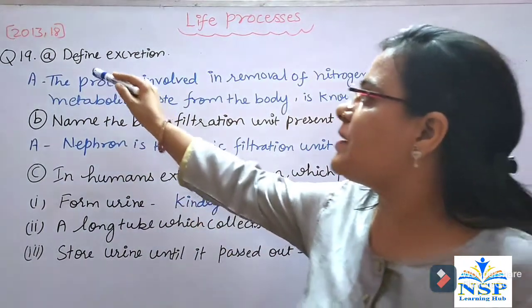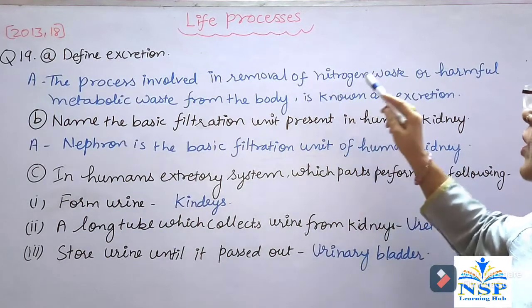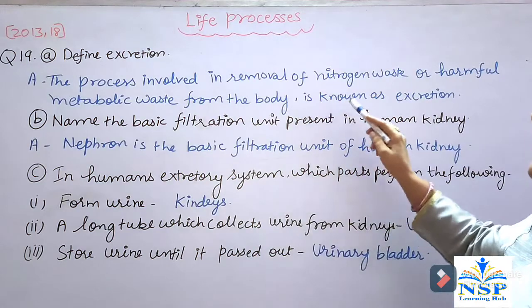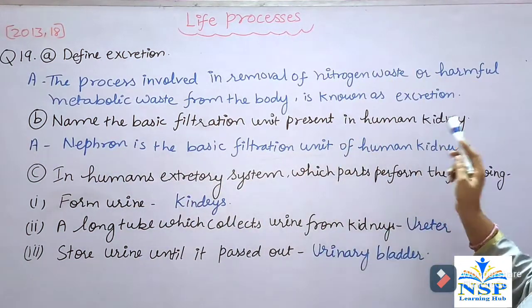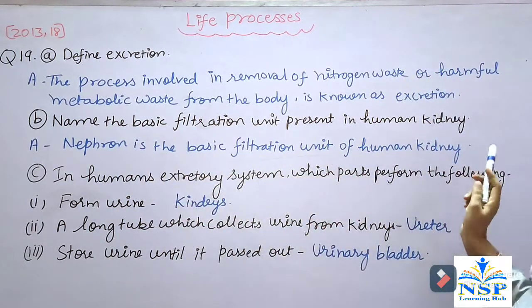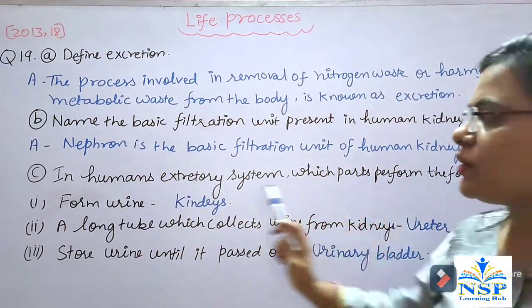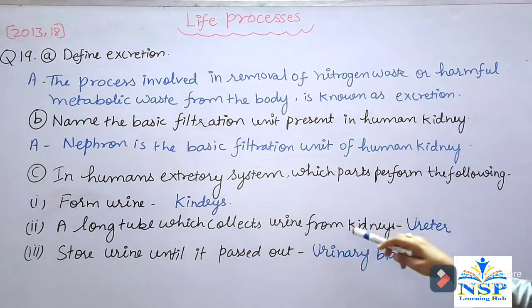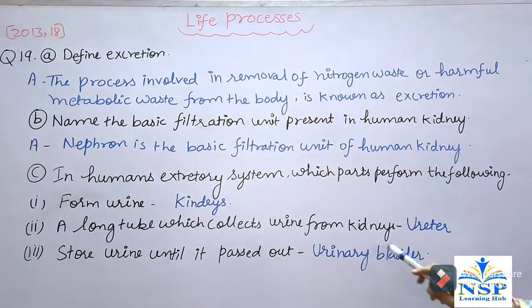Next question: Define excretion. The process involved in the removal of nitrogenous waste or harmful metabolic waste from the body is known as excretion. Name the basic filtration unit present in the human kidney. Nephron is the basic filtration unit of the human kidney. In the human excretory system, which part performs the following? Forming urine — kidney. A long tube which collects urine from the kidney — ureter. Storing urine until it is passed out — urinary bladder.